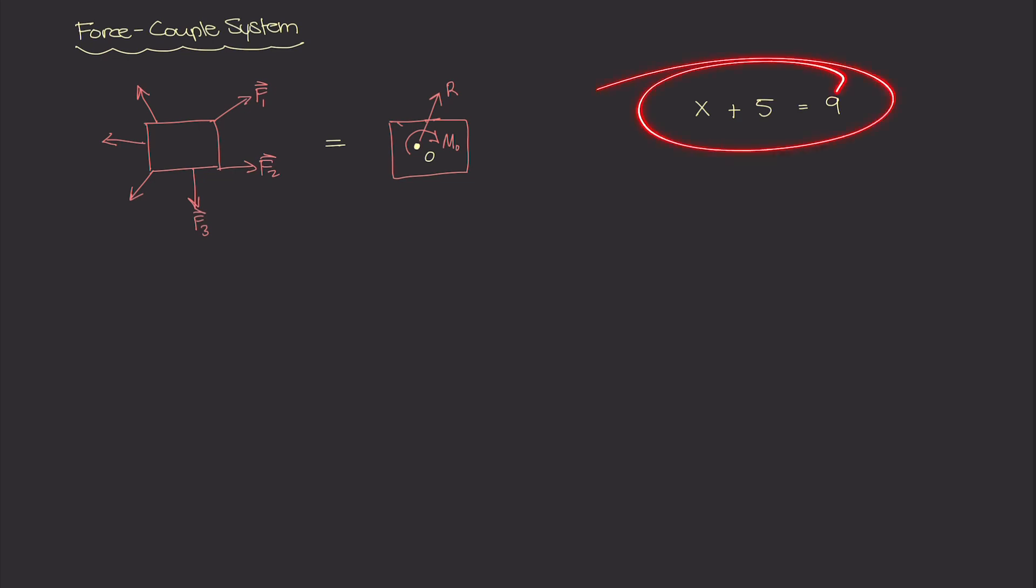The cool thing about algebra is that you can do whatever you want on one side of the equation so long as you also do it on the other side of the equation. So for an example, if I added 3 to the right side of the equation, I also need to add 3 to the left side of the equation. And this works because these two 3s cancel out. They are effectively 0.